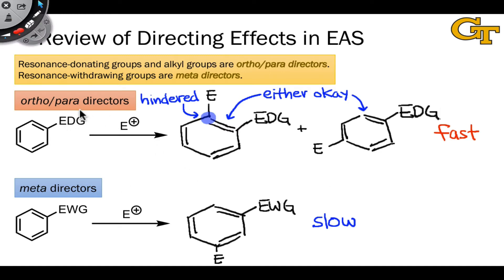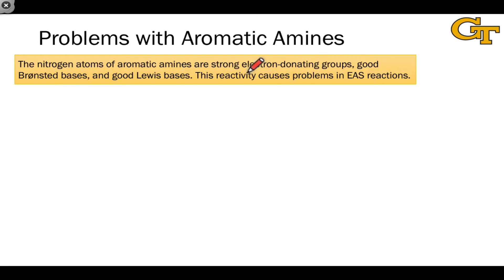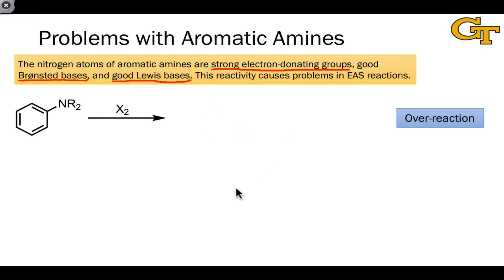It seems like the stronger the electron-donating group, the faster the electrophilic aromatic substitution reaction. However, we run into a little bit of trouble with aromatic amines, or anilines, where the electron-donating group is NH2 or NR2. Although it is true that the nitrogen atoms of aromatic amines are strong electron-donating groups, they're also good Brønsted bases and good Lewis bases. And this reactivity causes problems in electrophilic aromatic substitutions. Let's look at three different reactions that don't go as planned when we use anilines.